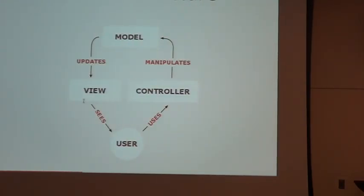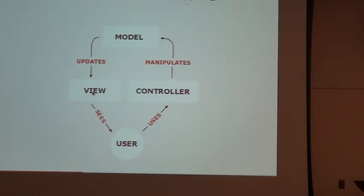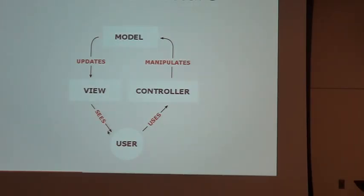Let's talk about the model-view-controller architecture in AngularJS. This standard MVC diagram comes straight from Wikipedia. We have our user looking at a view — the web application HTML we're creating. Behind that is the model, which is the data for our application, whether coming from a database or a web service. As the model changes, it updates the view. If the user wants to interact, they perform actions using the controller, which updates the model.